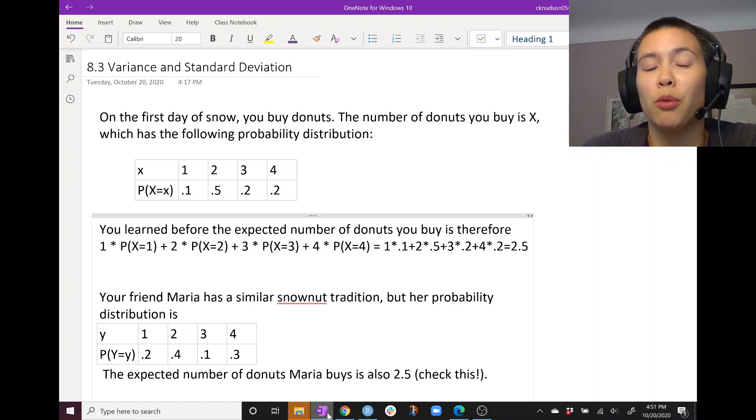With probability 0.1 you buy one donut. With probability 0.5 you buy two donuts. With probability 0.2 you buy three donuts and with probability 0.2 you buy four donuts.